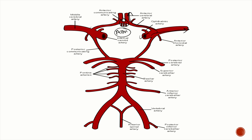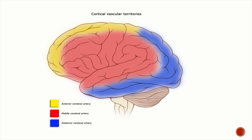The part of the ACA that is proximal to the ACOM is known as the A1 segment or the pre-communal segment, and the part that is distal to the ACOM is known as the post-communal segment or the A2 segment. You also have penetrating branches from the anterior cerebral artery, just as you have lenticulostriate branches in the MCA.